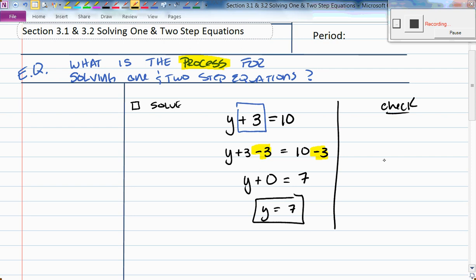But we have to do it to both sides to keep our equations balanced. So what does y plus 3 minus 3 equal? Yeah, this is y plus 0 equals 10 minus 3, which is 7. Y plus 0 is just y, which equals 7.